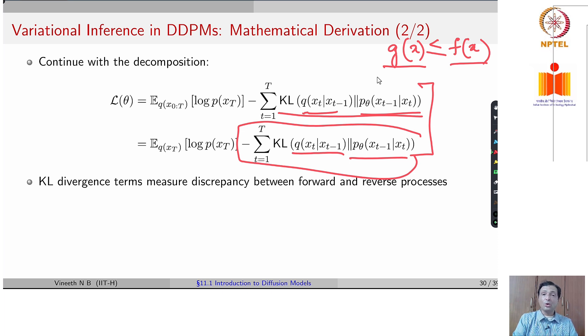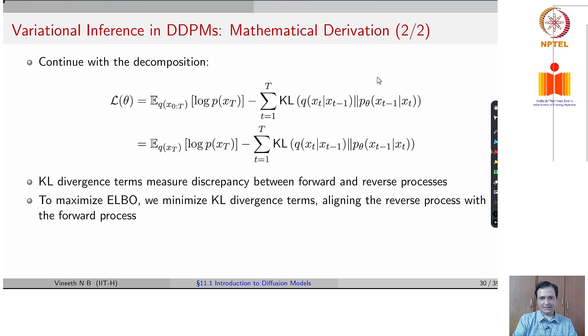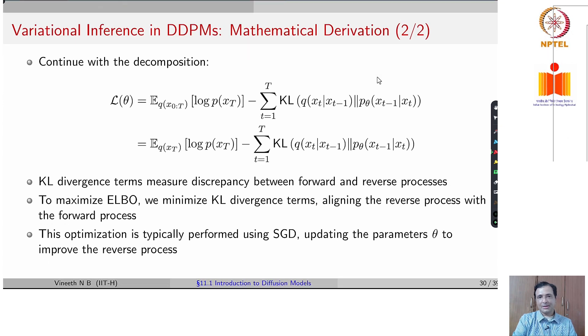In intuitive terms, what you are doing now is trying to match your reverse process and your forward process. Remember, the goal of training this diffusion process was making the reverse process guess what noise was added in the forward process and subtract that from your sample and keep doing that iteratively. This KL divergence tries to match the forward and reverse processes. So to maximize the ELBO, we minimize the KL divergence terms, which helps us with this alignment. And this learning is typically performed using SGD, which is commonly used with KL divergence.